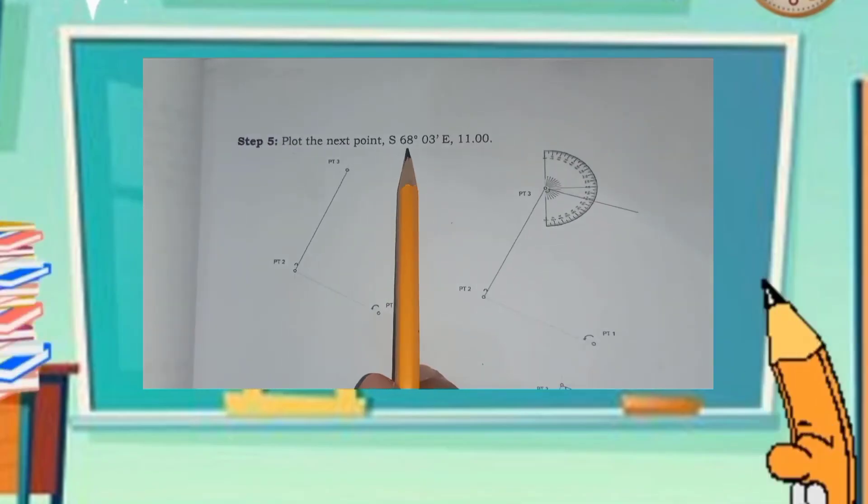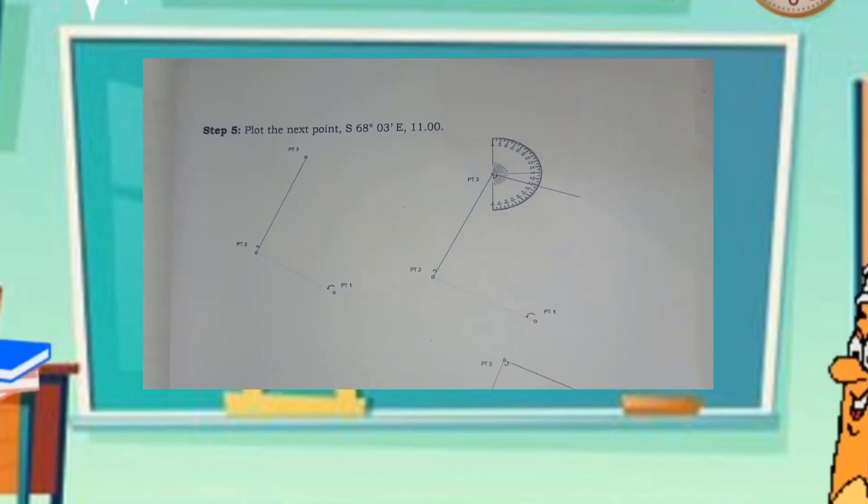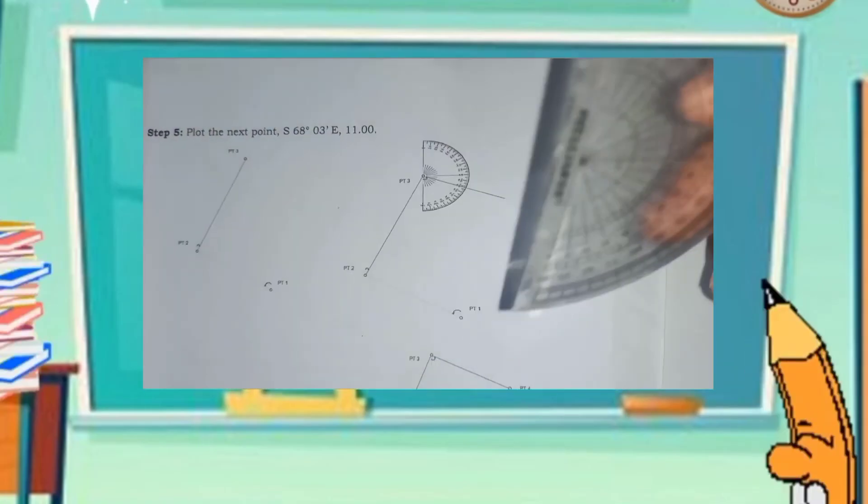Step 5, plot the next point, 68 degrees, 3 minutes south, due east. With a distance of 11.